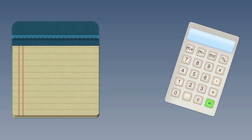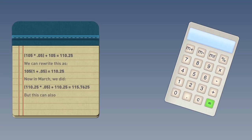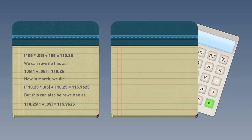This formula can be derived from the example above. In the second month, February, we calculated... We can rewrite this as... Now, in March, we did... But this can also be rewritten as...